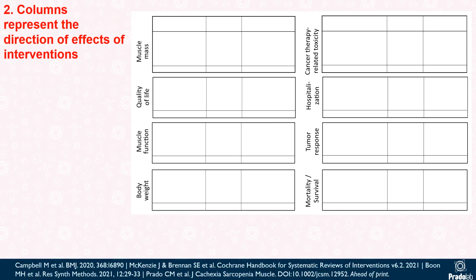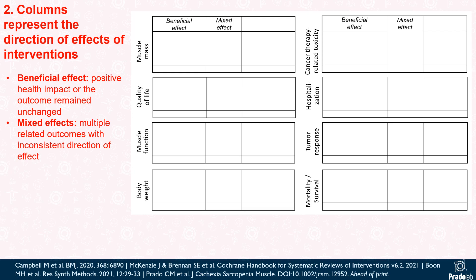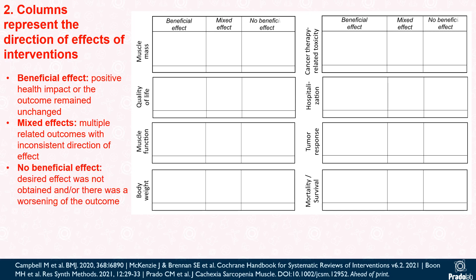Columns of harvest plots represent the direction of effects of interventions. In our manuscript, we described three distinct directions of effects. A beneficial effect was reported if the intervention had a positive health impact or the outcome remained unchanged, with the latter indicating that patients receiving HMB maintained the outcome of interest. Studies were labeled as mixed effect if less than 70% of outcomes had consistent direction of effect. In contrast, HMB supplementation was described as having no beneficial effect if the desired benefit was not obtained and/or there was a worsening of the outcome.